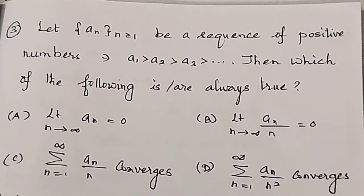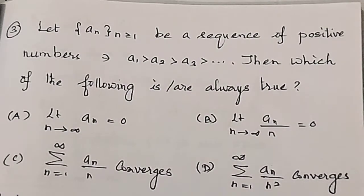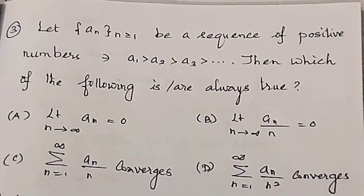Let a_n (n ≥ 1) be a sequence of first three numbers such that a1 greater than a2 greater than a3 and so on. Which one is always true? Let's look at the first, second, third, and fourth options.